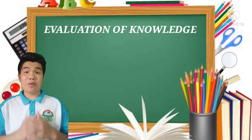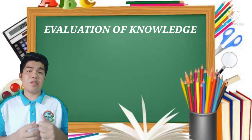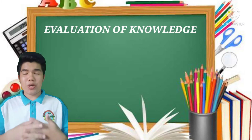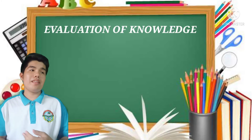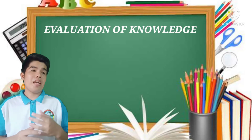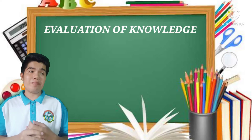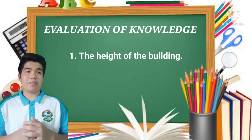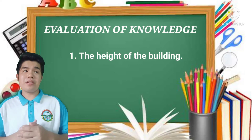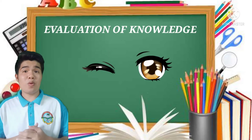Very good. Now that you have learned about the five sense organs and their functions, I have prepared ten questions for you to answer to assess your knowledge. Here's the instruction: can you tell which sense organ you will use to describe the following? Let's use number one as an example. Number one: the height of the building. Your answer should be what sense organ you will use — it is our eyes.